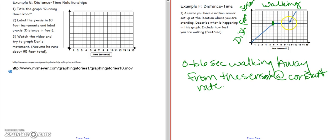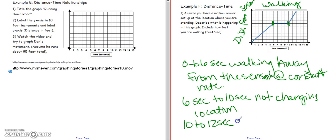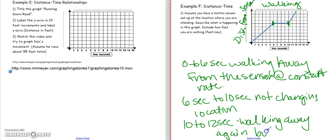This is kind of like the elevation one, except we're talking about walking away from the sensor rather than going up. At this point we're not moving at all, but time is still ticking by. Then from 10 seconds to 12 seconds we're walking away again. This line seems a little bit steeper than the first one, so we're walking away again but faster. The steeper the line, the faster you are going.